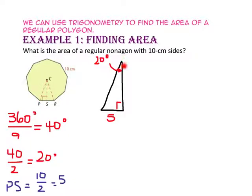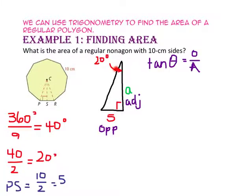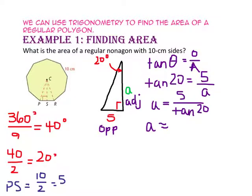Since we want to find the length of the apothem and we know the length of the side opposite the 20 degree angle, we can use trig. Since we know the length of the opposite side and we're looking for the length of the adjacent side, let's use the tangent ratio. We'll substitute 20 degrees in for theta, 5 for the opposite side, and a for the adjacent side. Since the variable is down low, we will switch places and divide. So the length of the apothem is approximately 13.7 cm.